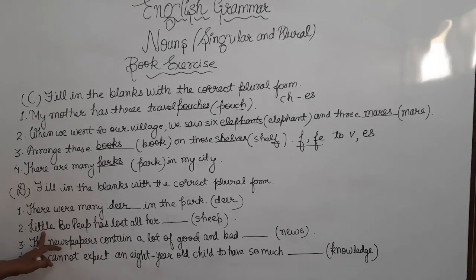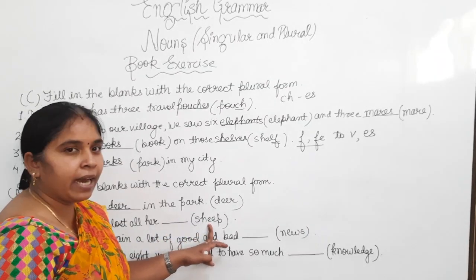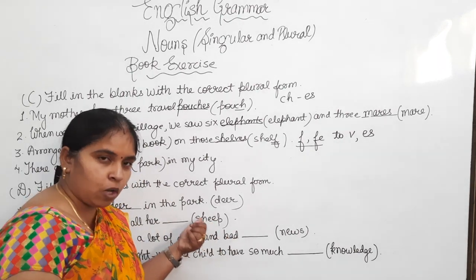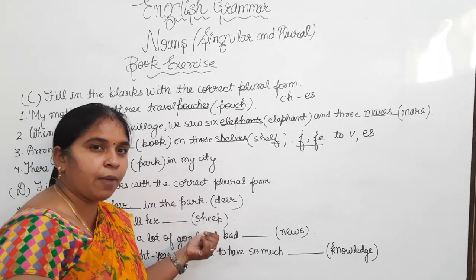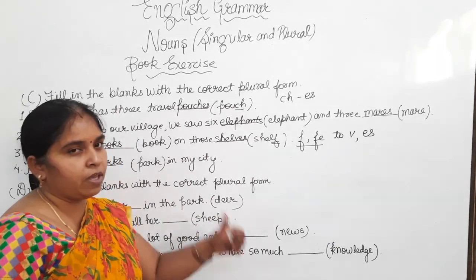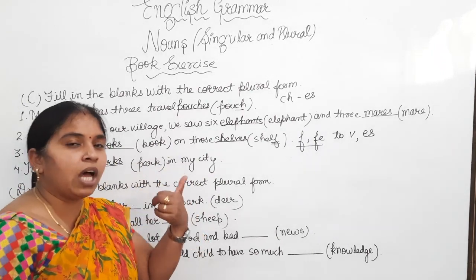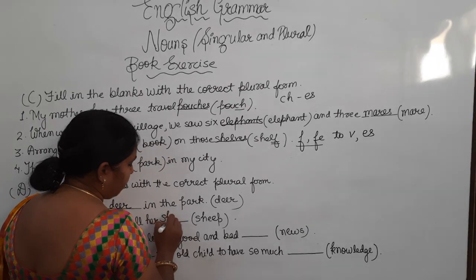Now, next sentence. Little Bo Peep has lost all her dash. And in the bracket, the noun is sheep. And the singular noun is sheep, and the plural of the sheep is sheep. The spelling will remain same in both the nouns, singular and plural. So, what will come here? Sheep.